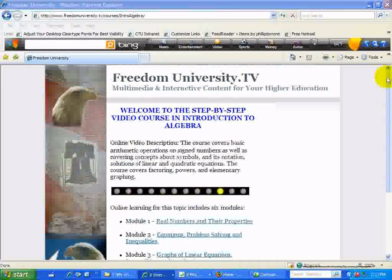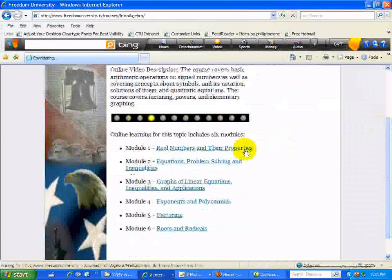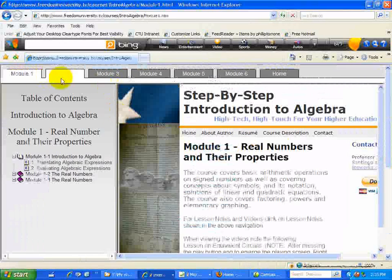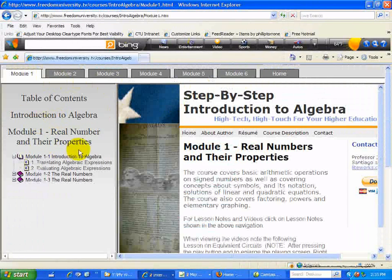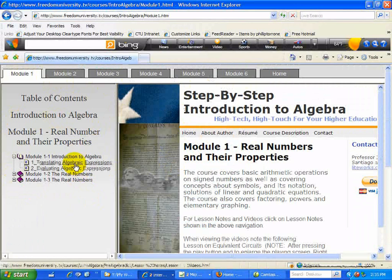So let's look at Module 1. Here you have the six modules I discussed earlier. Module 1 is Real Numbers and Their Properties. So on the left side is basically a table of contents, and on the right side is where the video is displayed as you click on the links.